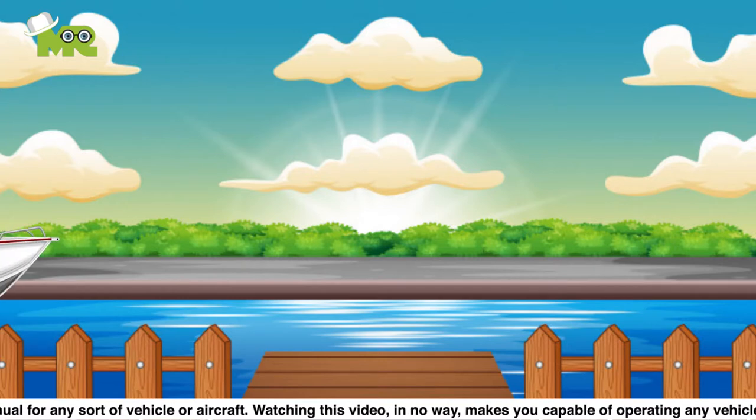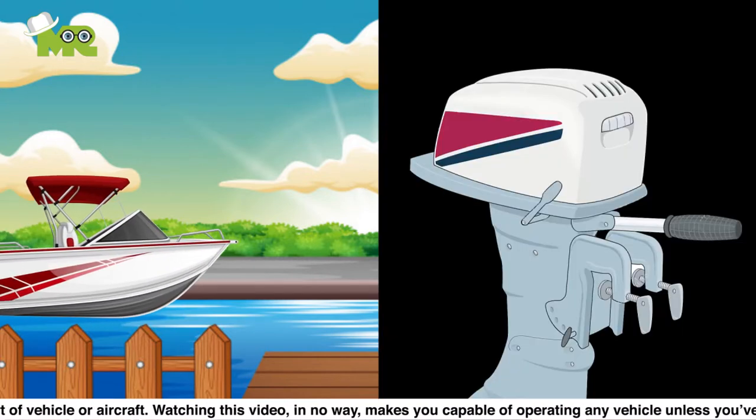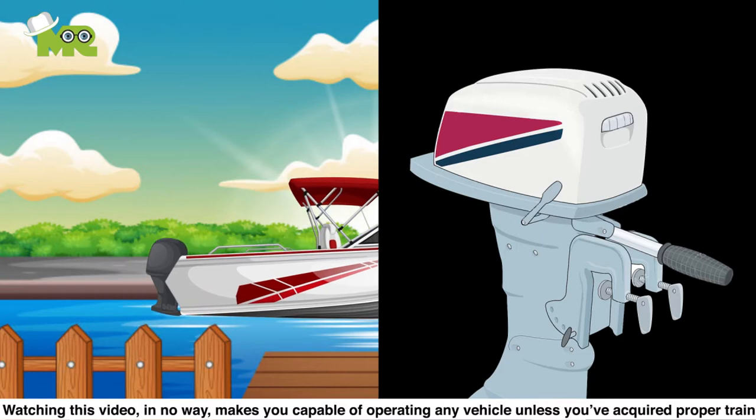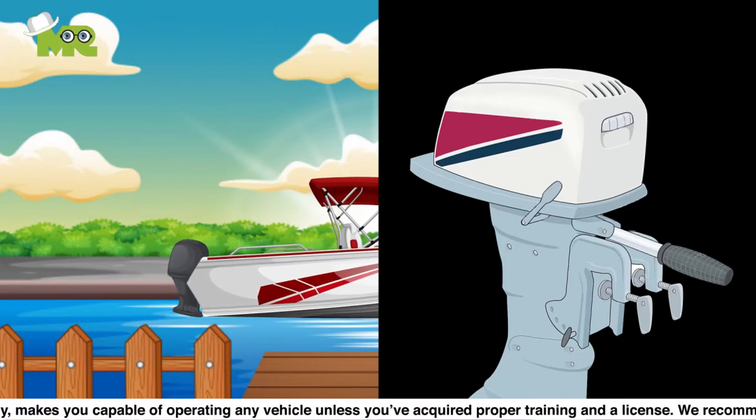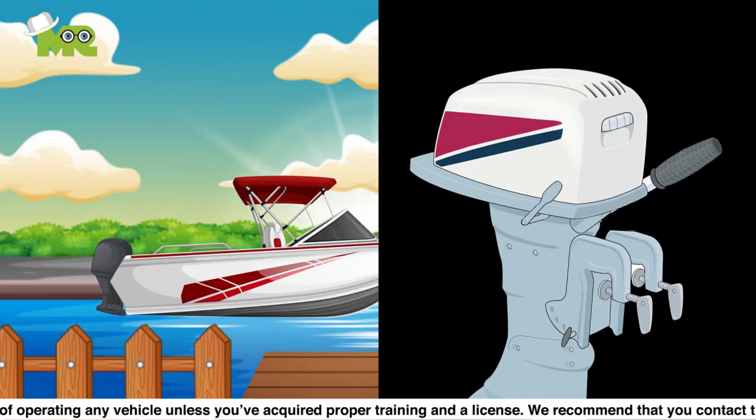Step 8. Start moving forward by pushing the throttle handle gently until you feel the boat shift into gear. Step 9. In case you want to reverse a bit to back out before moving forward, gently pull the throttle handle to move back.